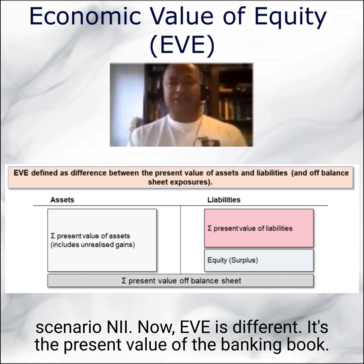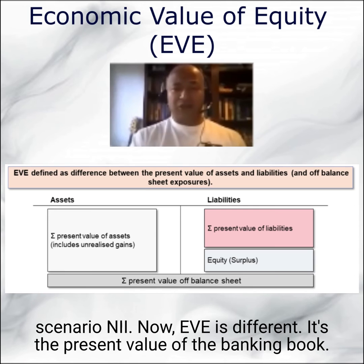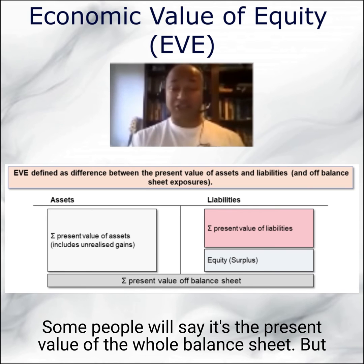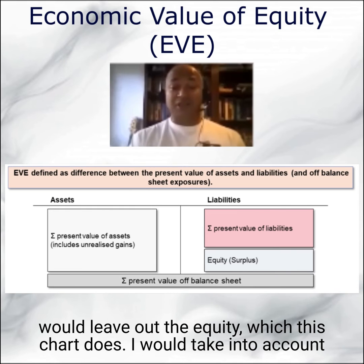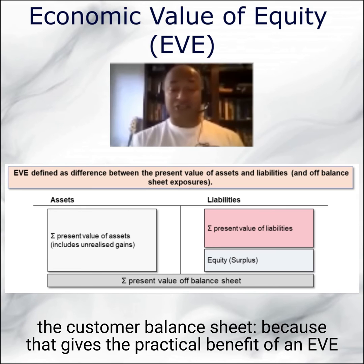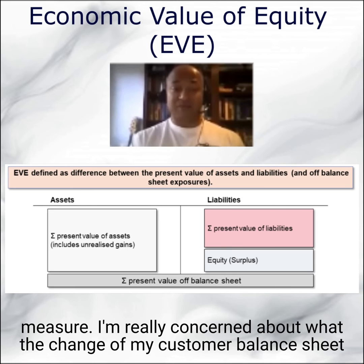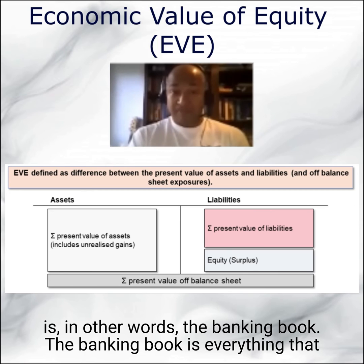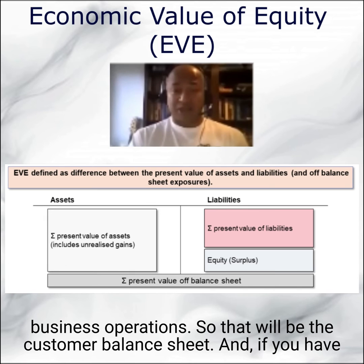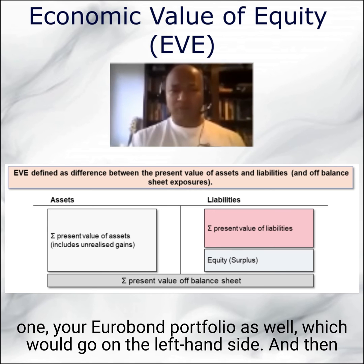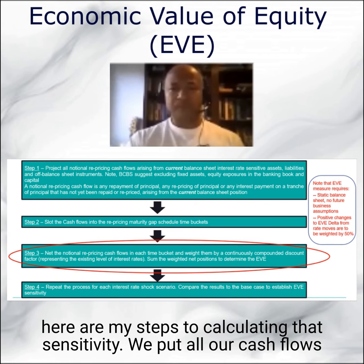EVE is the present value of the banking book. Some say it's the present value of the whole balance sheet, but practically I would leave out equity, and I would focus on the customer balance sheet — the banking book. The banking book is everything that isn't the trading book; it arises from business operations, so it includes the customer balance sheet and, if you have one, your bond portfolio as well.